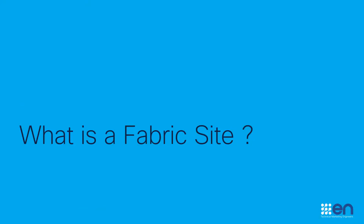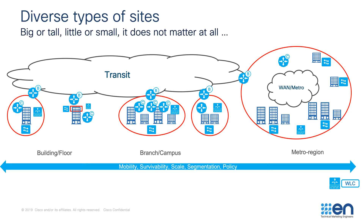A fabric site is nothing but a logical area with a unique set of fabric nodes such as control plane, border, and edge. We may also need a wireless LAN controller if wireless capabilities are a requirement. A fabric site may cover a single physical location such as a branch or campus, be spread across multiple locations such as a metro campus, or be a subset of a location such as a building or floor within a campus.